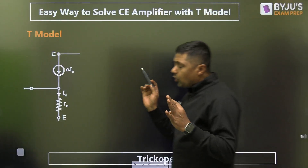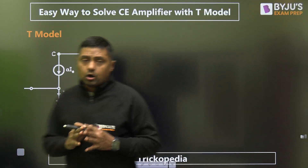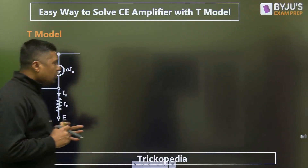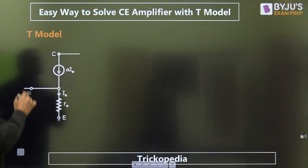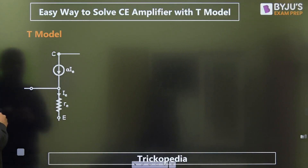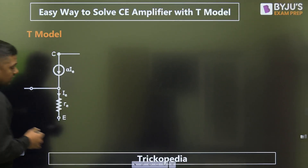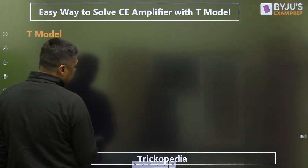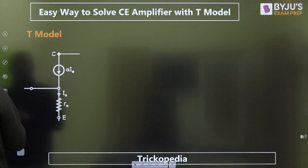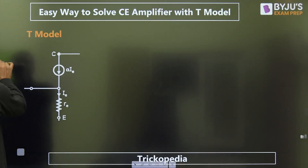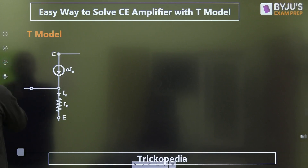First of all, what is the T model? When we are talking about the T model, it is a linear model — it is a small signal model. When we are doing the AC analysis, we are using this model. Here, alpha is the large signal current gain for common base and RE.